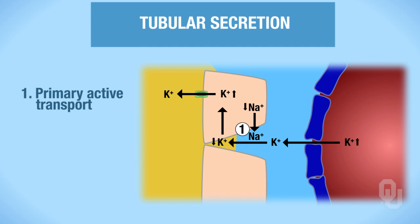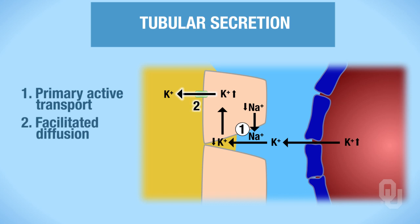In the plasma, we have a high concentration of potassium. Potassium diffuses through the pores between the endothelial cells of the capillary, from high concentration toward a lower concentration. Then we pump it in using primary active transport. Then it goes through a channel on the apical membrane—going from high concentration to low concentration through a channel—that's called facilitated diffusion.